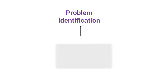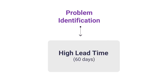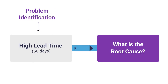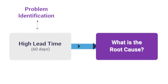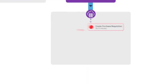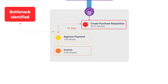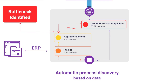Here's an example of how it works. We have a scenario of high lead time in the purchasing process and want to understand the root cause. With UpFlux, we have a complete view of the process and automatically see which activity has the highest time through color scales. For example, a 25-day time between payment approval and requisition creation.